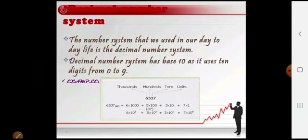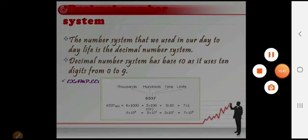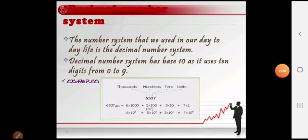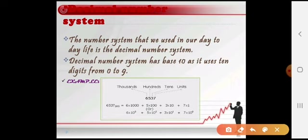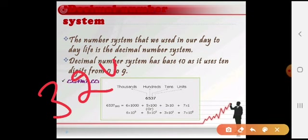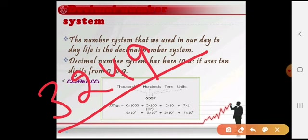Decimal number system is the number system that we use in our day-to-day life. Yani jo humara day-to-day life mein hum jo numbers use karte hain — 4040, 3090, 2000, 1000, 3249 — yeh normal numbers hum day-to-day life mein is tarah ki number series ko istemal karte hain. Yeh humare decimal numbers hote hain.